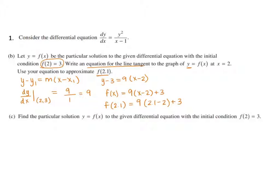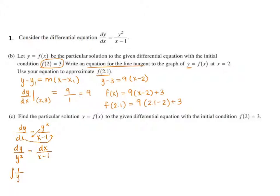Part c — this is usually where you can rack up quite a bit of points. We were given that dy/dx is equal to y² over (x minus 1). We are going to first separate — get our dy and y coordinate on one side and our dx and x minus 1 on the other. After we separate, we do integrate. That's going to be the integral of 1 over y² dy equals the integral of 1 over (x minus 1) dx.